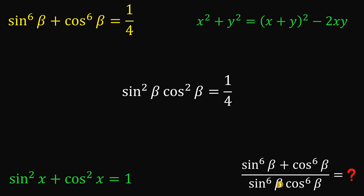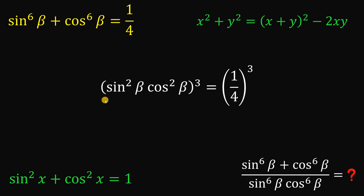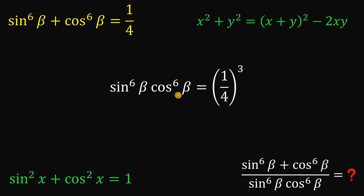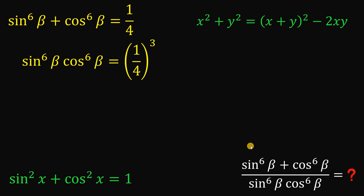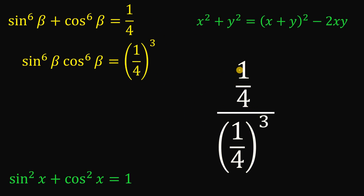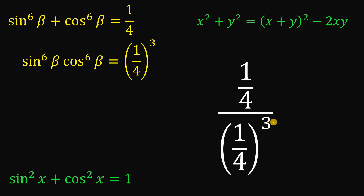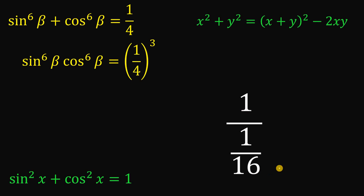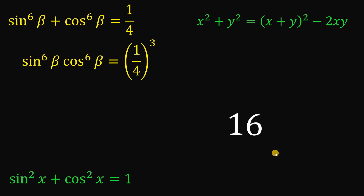But we want the product of sine raised to the power of 6 of beta times cosine raised to the power of 6 of beta. So we raise both sides to the power of 3. This gives us the product of sine to the 6th power times cosine to the 6th power. Using these two results, we can now evaluate the expression: the numerator is 1 over 4 and the denominator is 1 over 4 raised to the power of 3. So 1/4 divided by (1/4)³ equals 1 over (1/4)², which is 1 over 1/16, and 1 divided by 1/16 equals 16.